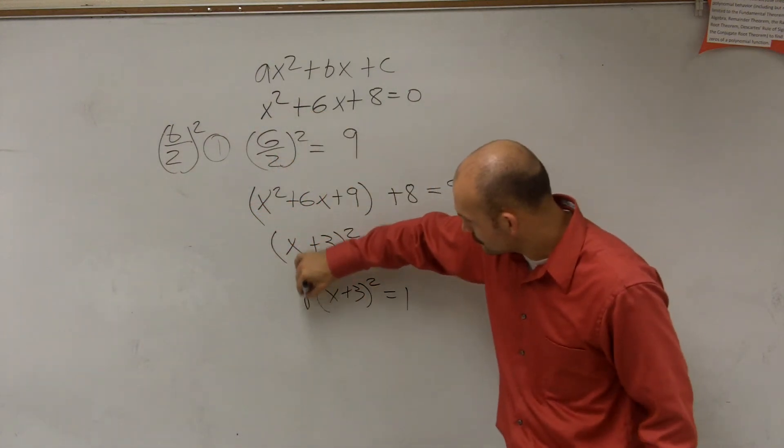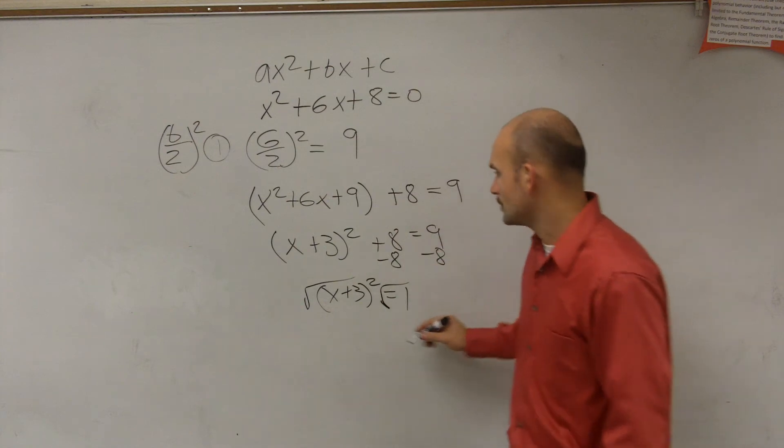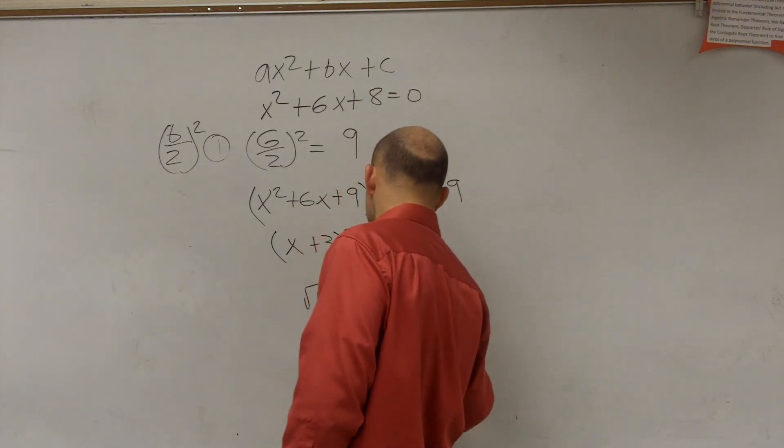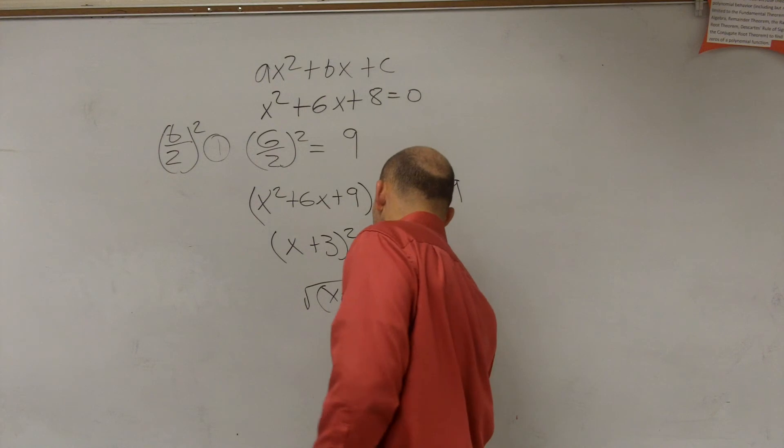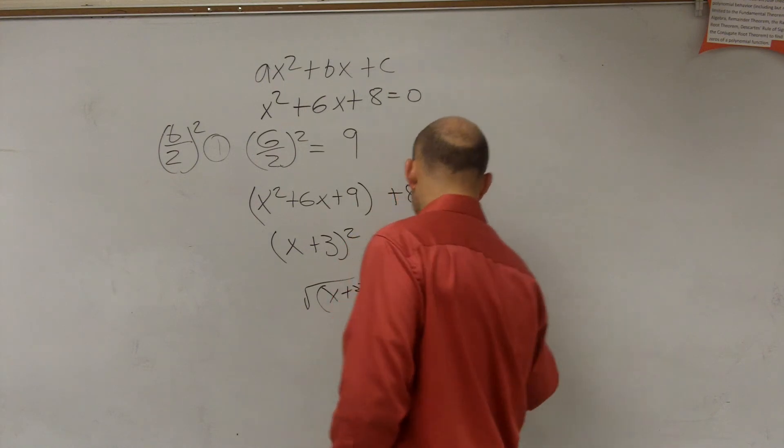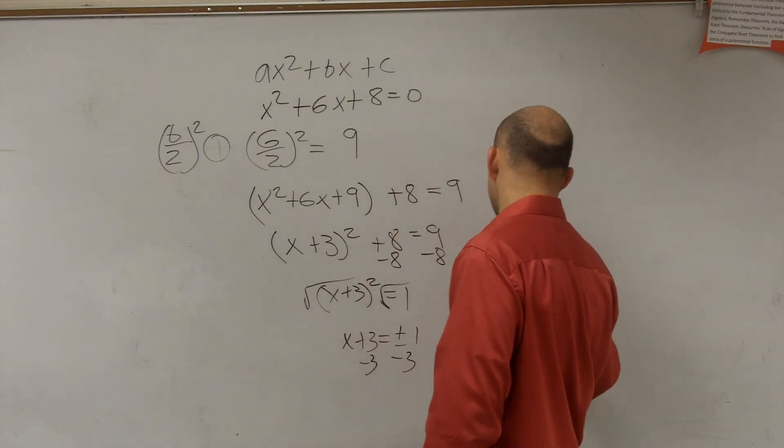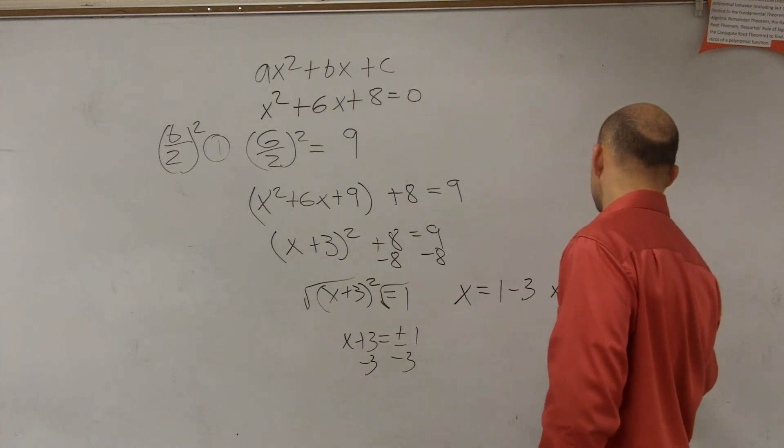Now, the inverse operation, square root both sides. So you have x plus 3 equals plus or minus 1. Subtract 3. So you have x equals 1 minus 3 and x equals negative 1 minus 3.